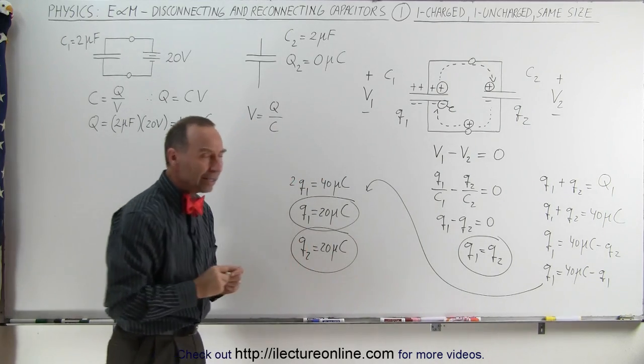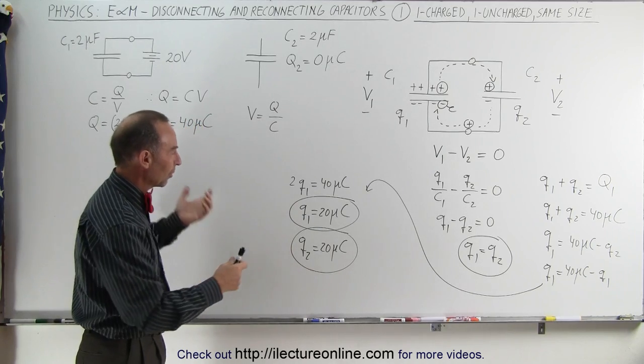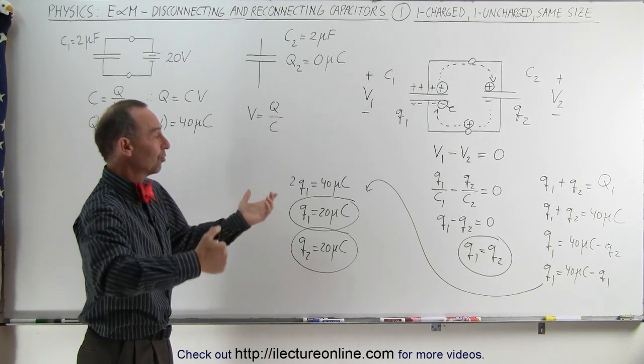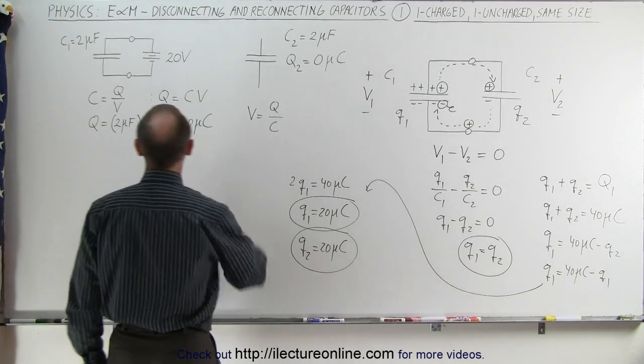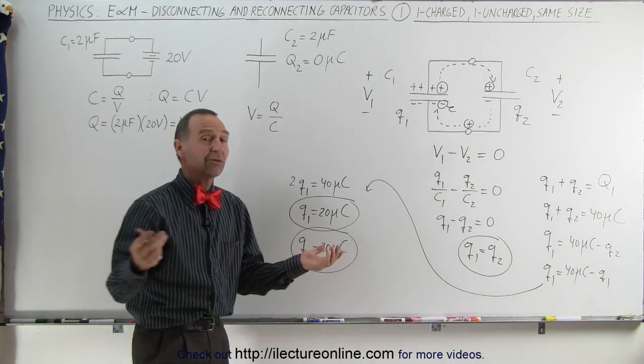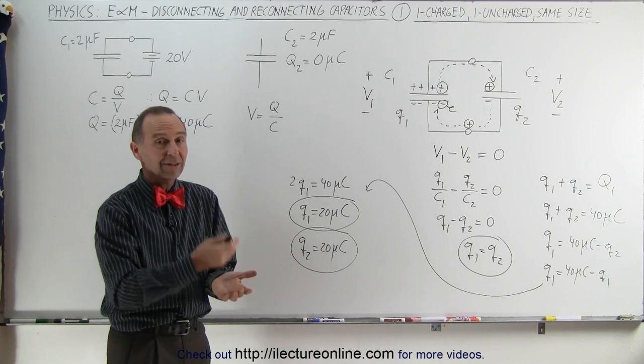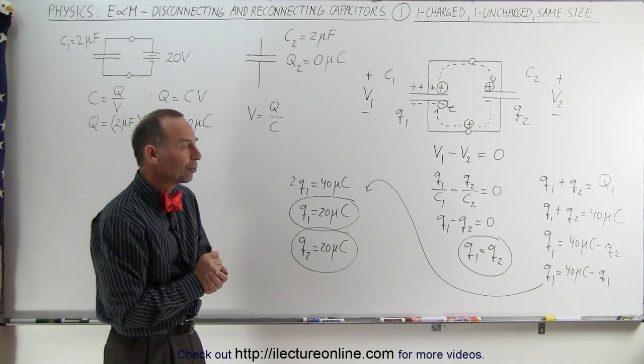Now you may say, well, why did I go through all that work to come up with something that was actually that simple? Once you realized that Q1 had to be equal to Q2, and you started with 40 microcoulombs, it would be easier to conclude that, yes, each will have half of that, therefore, each 20 microcoulombs.